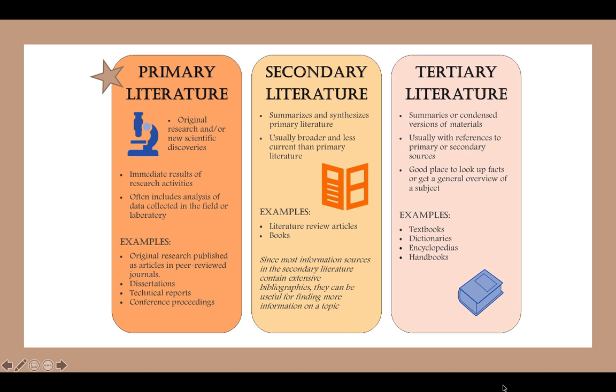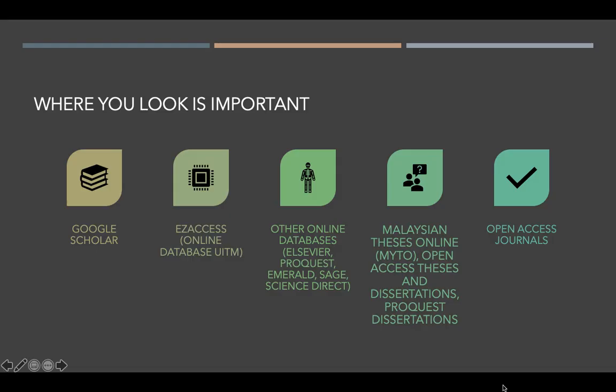Remember the star — we would always want to cite from primary literature. You can also use secondary literature if you can find a meta-analysis or a systematic review; that would be helpful for novice researchers. So where you look for literature is very important. You can look in Google Scholar — that's my favorite. You can also use Easy Access if you encounter papers that are locked and you need to pay for them. UITM has already subscribed to many databases, so you can use Easy Access if you're not on campus. When you are on campus, you can access journals more easily.